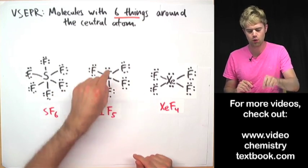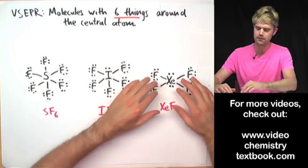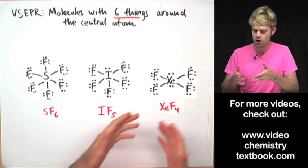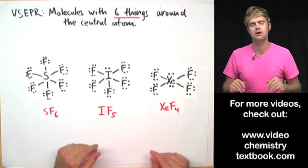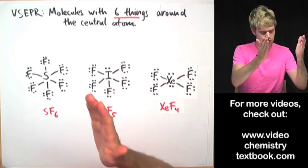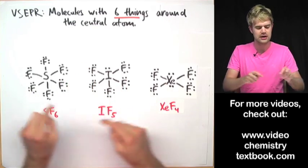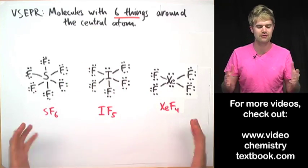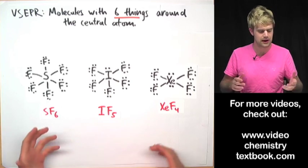We can have five bonds and one lone electron pair, we can have four bonds and two lone electron pairs. For whatever reason, in these type of molecules, we don't tend to see more than two lone electron pairs. So there are really actually only three types of molecules that we'll have to learn the three-dimensional shapes for, okay? Let's get started.